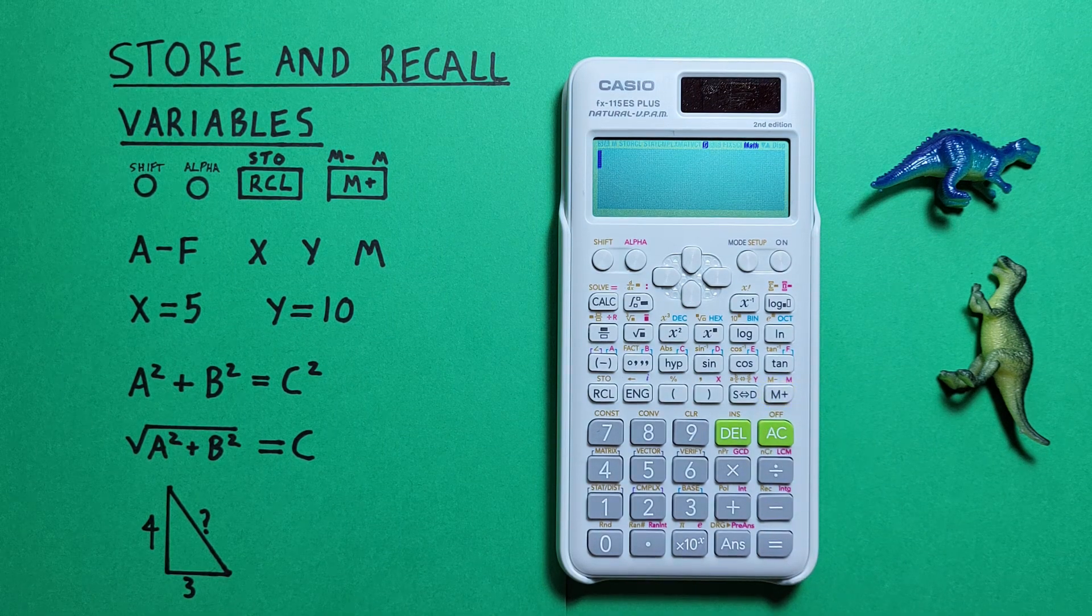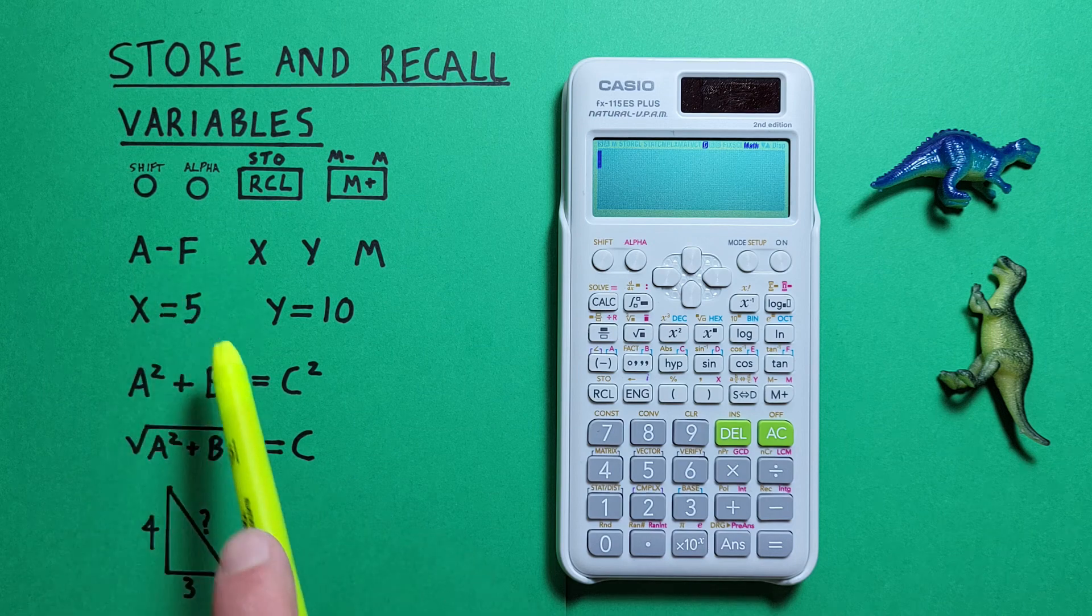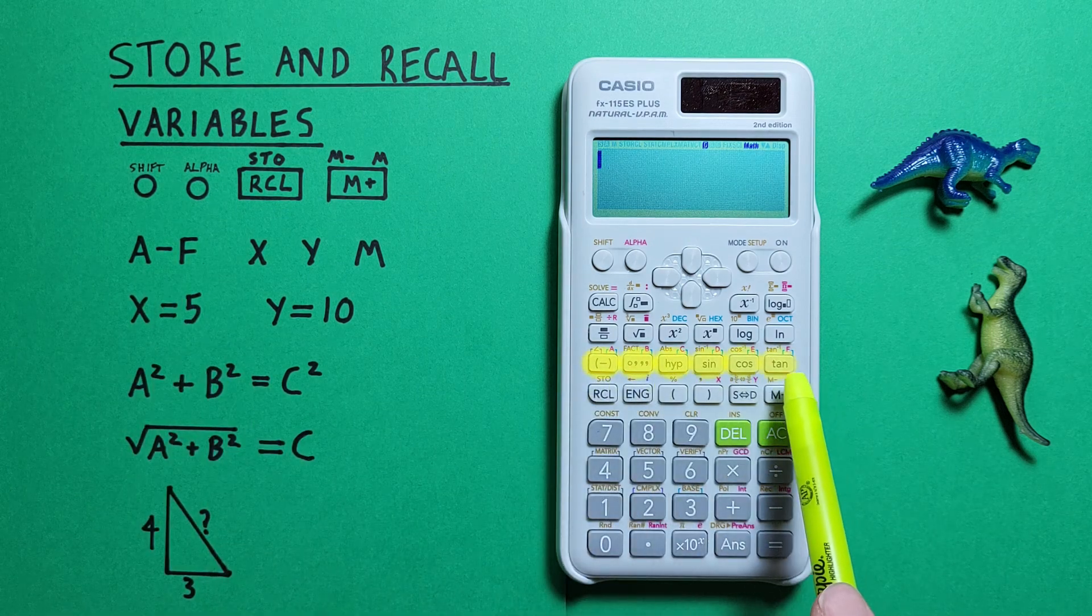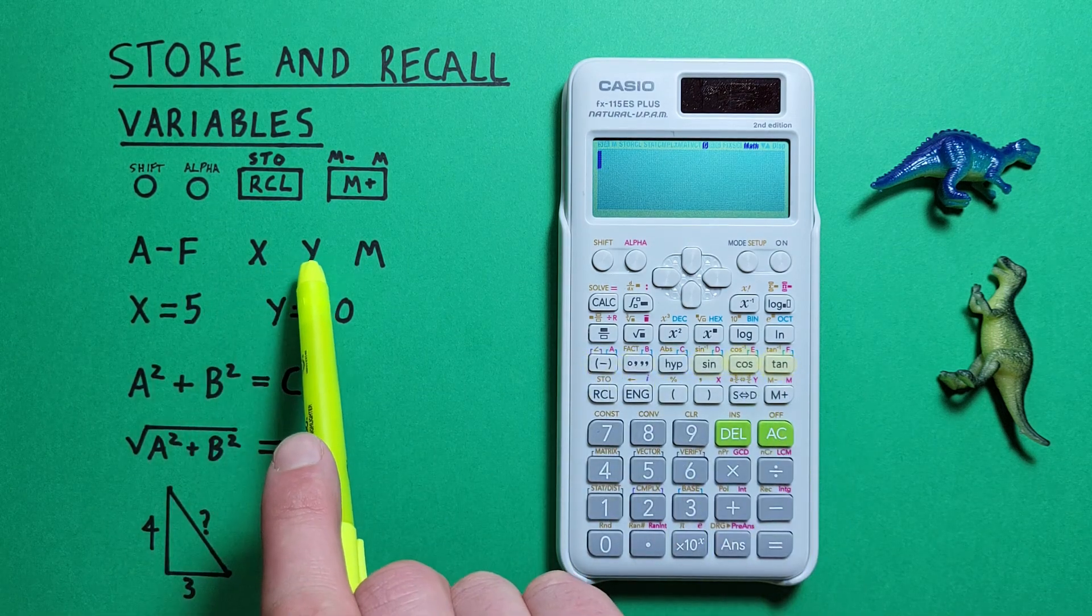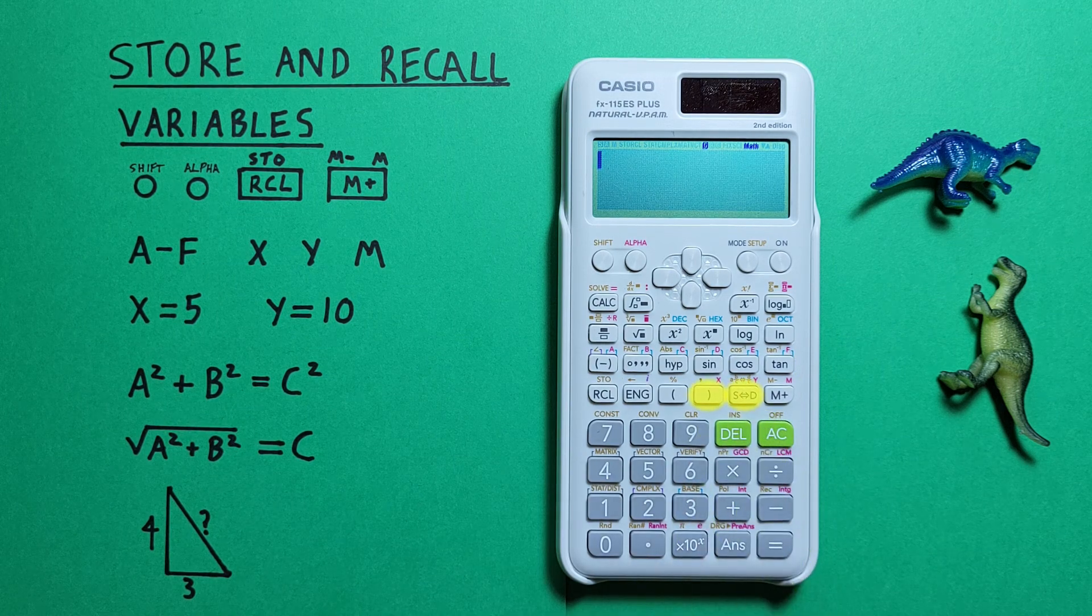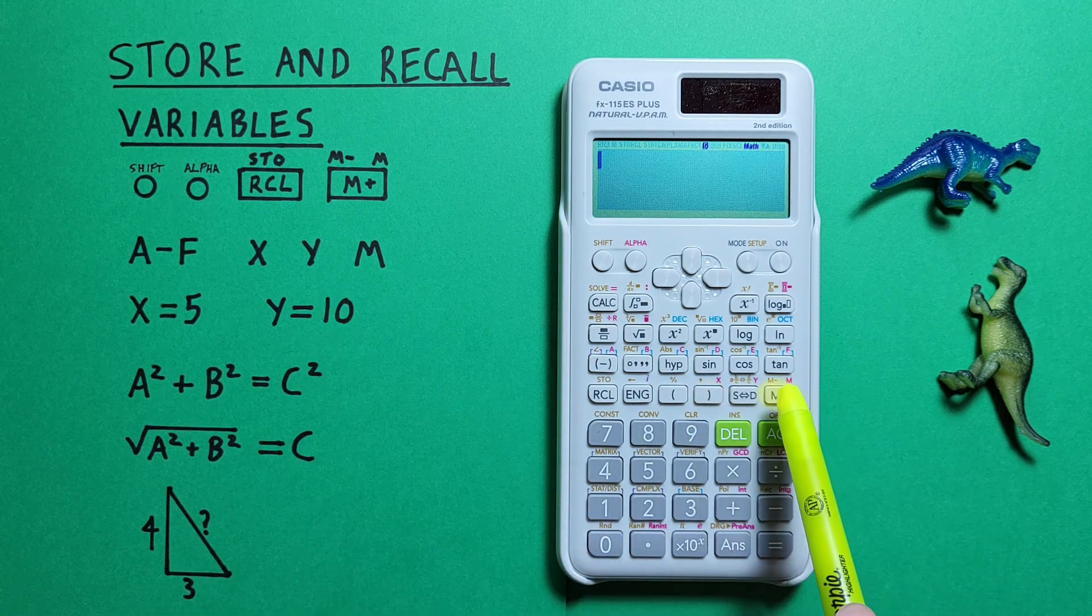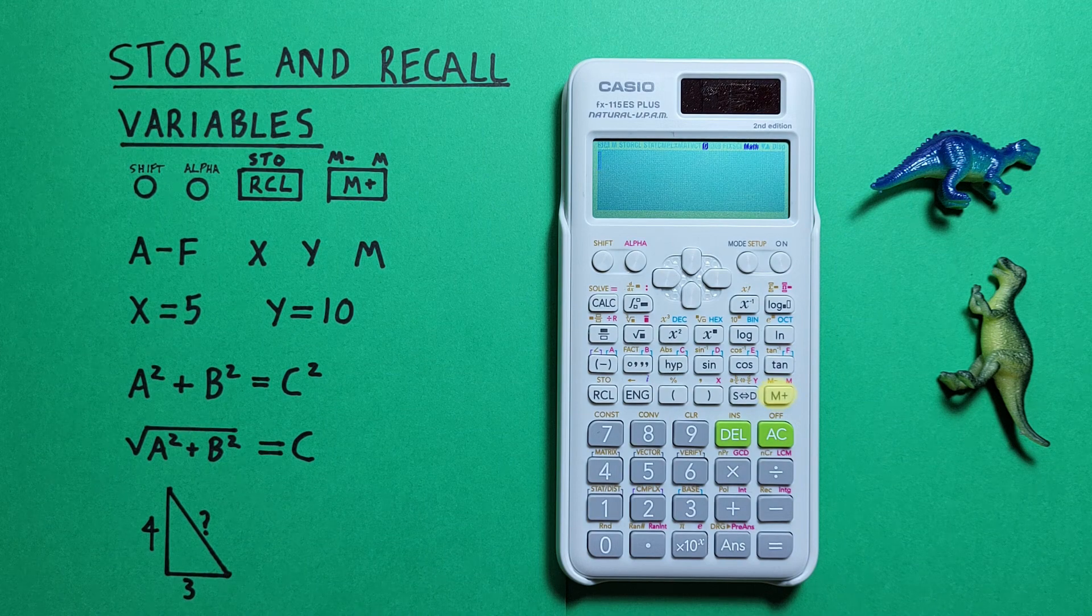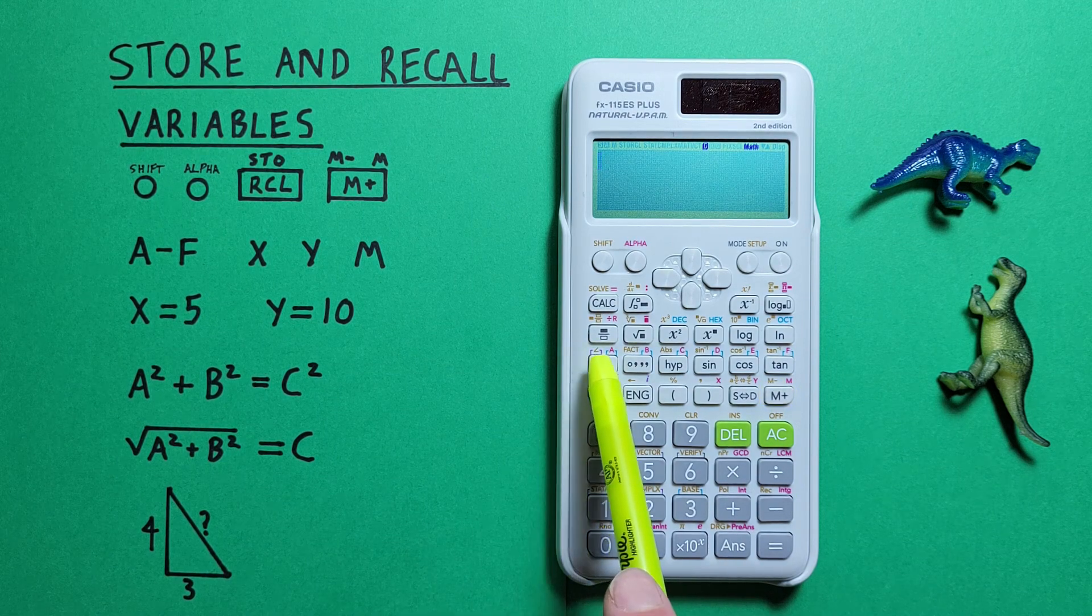We'll also use the memory slots A through F that are located along here, X and Y down here, and M located here that are all accessible using the alpha function of these keys.